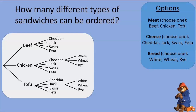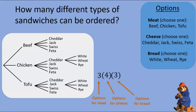You should imagine all those branches being there. Since every endpoint sprouts three new branches, the total number of sandwiches will triple. Written out from scratch: we have three options for meat, each leading to four options for cheese, each leading to three options for bread. Thus, we have thirty-six distinct sandwiches altogether.